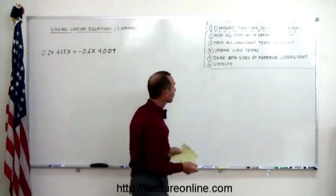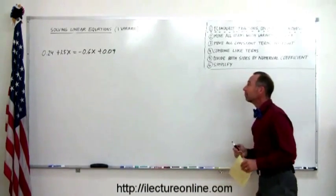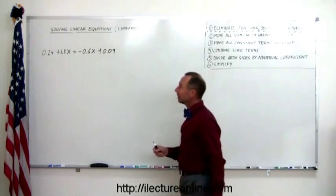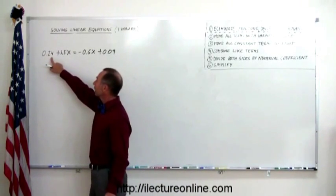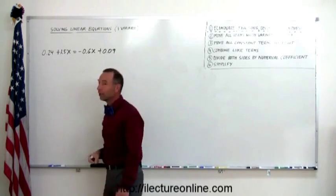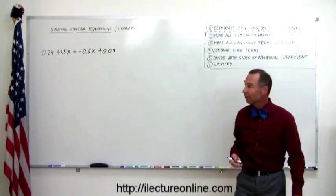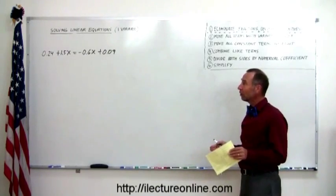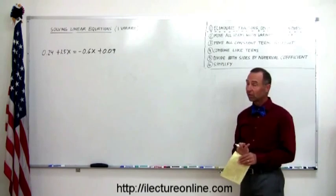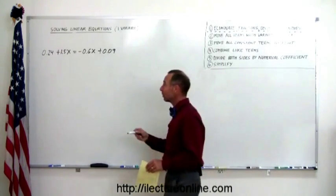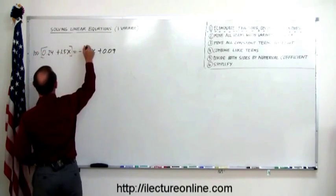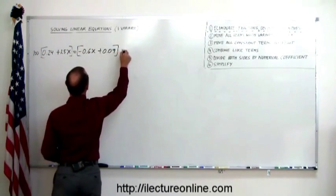So again, step number one, eliminate fractions, decimals, and parentheses. Clearly we have decimals here. But notice that this number here has two decimal places. This number here has just one. This number here has one. This number has two. And the rule is, however many decimal places you have, you multiply both sides of the equation with a one and that many zeros behind it. So in this case, two decimal places, one with two zeros means multiply both sides of the equation by 100. So multiply this by 100 and multiply this here by 100.